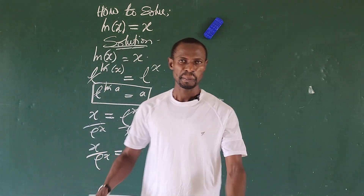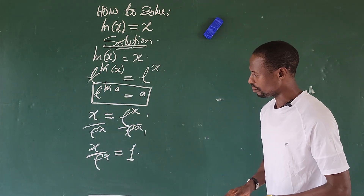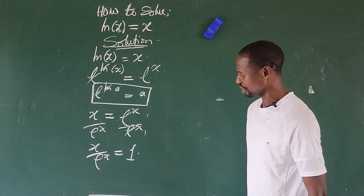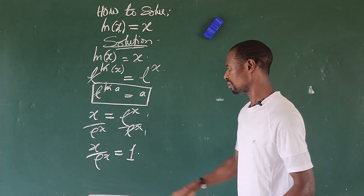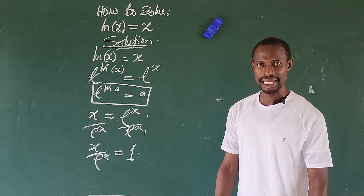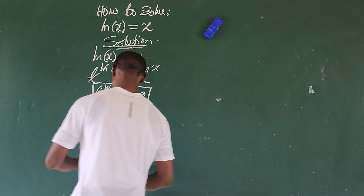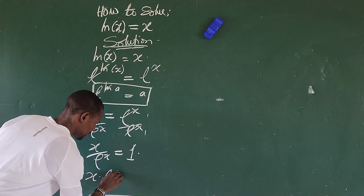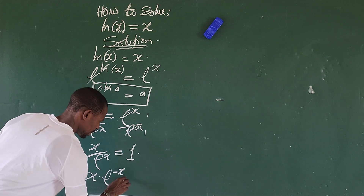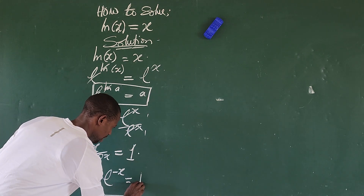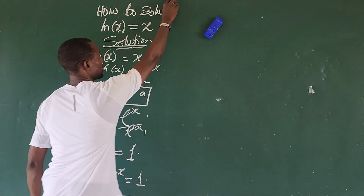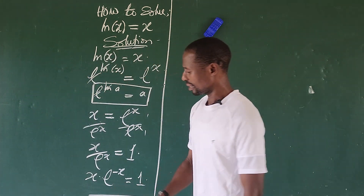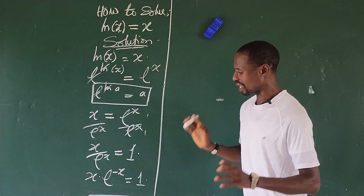We want to eliminate the division sign. Moving the exponent to a negative sign, we can rewrite this as x times e to the power of minus x equals 1.